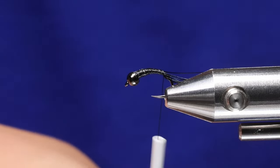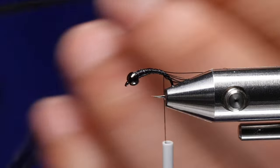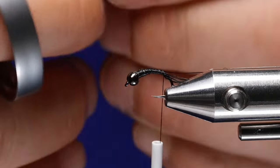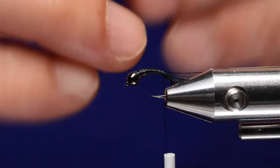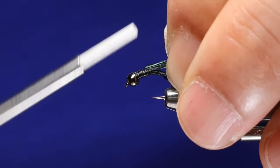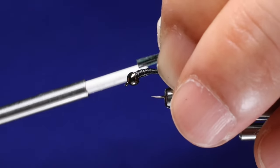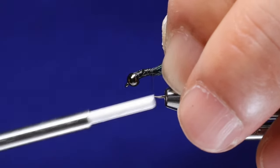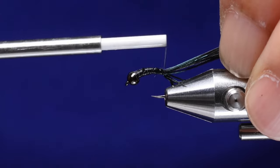Next we're going to tie in more pheasant tail for the body. Get a bigger clump than the tail itself. I'm going to trim off the tips which are super brittle. And then I basically want to tie this in where the pheasant tail... Let me bring my thread back up here. Just behind where the lead wire stops. It'll help form that taper and then take it back there to the tail.